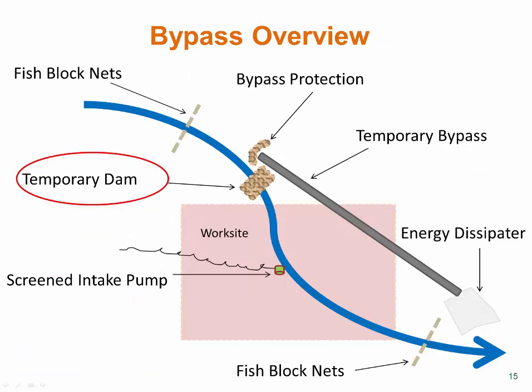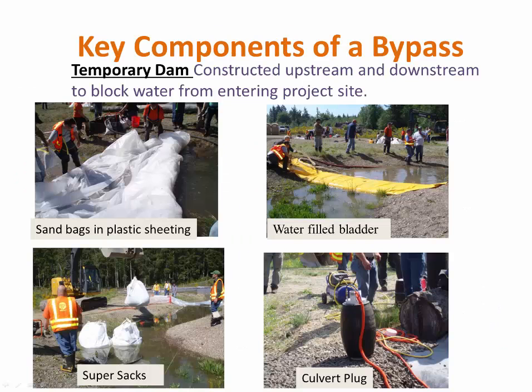Next we'll look at a few different types of temporary dams used to block water flow. If the site is relatively flat, the Department of Fish and Wildlife may also require a dam downstream of the work area to prevent backwater from entering the site. For a standard dam, burlap bags filled with pea gravel are preferred. Gravel bag dams wrapped in plastic sheeting work very well to prevent leakage. Water filled bladders need to be staked along the upstream side to prevent them from rolling downstream.